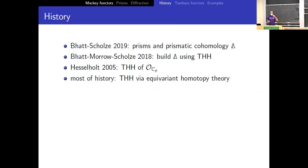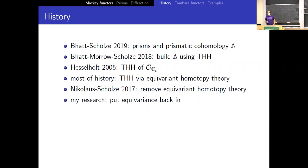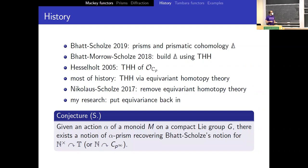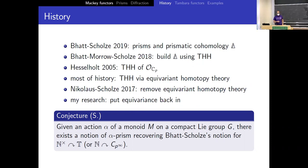For most of history, THH was studied via genuine equivariant homotopy theory. Along the way, Nikolaus and Scholze showed that in the case of THH that information is highly redundant and you can take it out. In my research I've been interested in bringing equivariant homotopy theory back into the picture. In particular, today I would like to present evidence for a conjecture: the notion of prism can be generalized to any monoid acting on a compact Lie group, and when we take the natural numbers under multiplication acting on the circle group, this should recover Bhatt–Scholze's notion of prism.